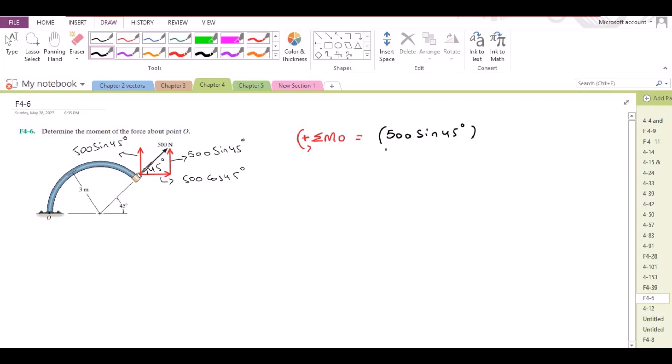Now, for the moment arm. By definition, moment arm is the perpendicular distance from the line of action of force to the pivot point. This right here is the line of action of the vertical force. For the moment arm we have to find this distance.